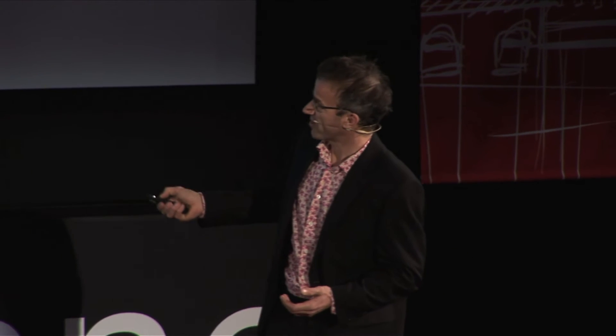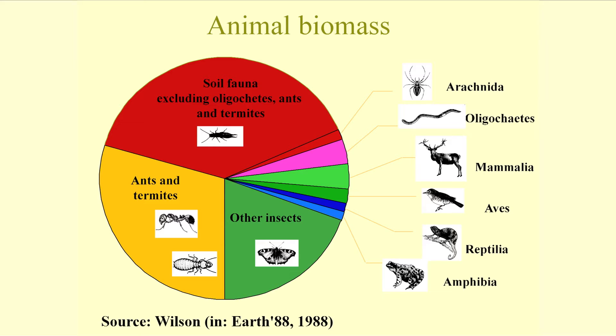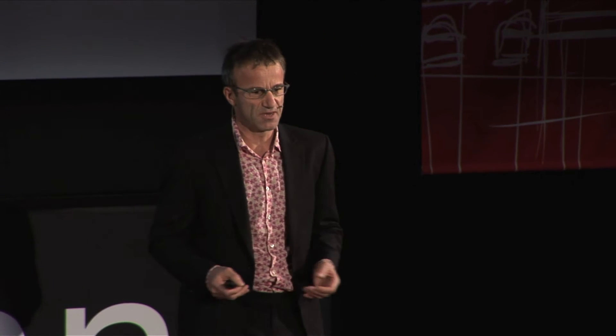If you think of vertebrates — the birds, the mammals — this is quite small. So ants are much more important in a tropical forest than are all vertebrates together. And why is it so?